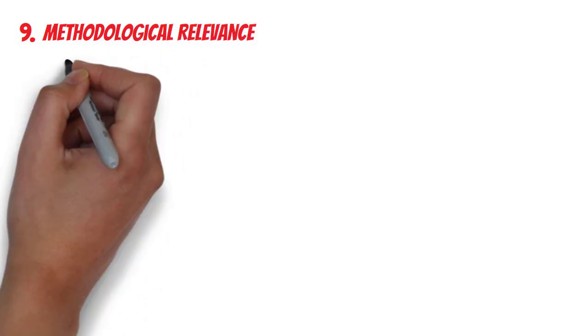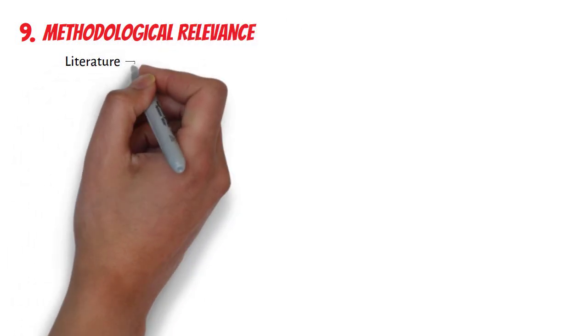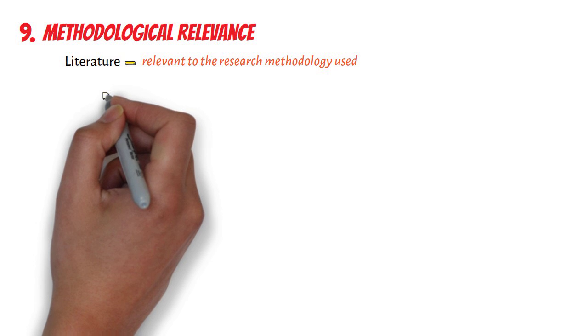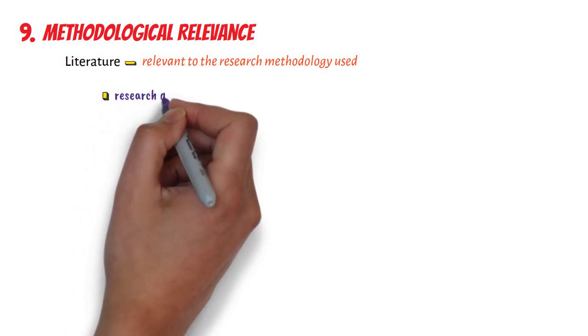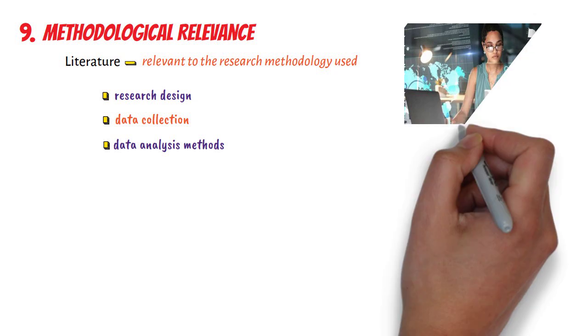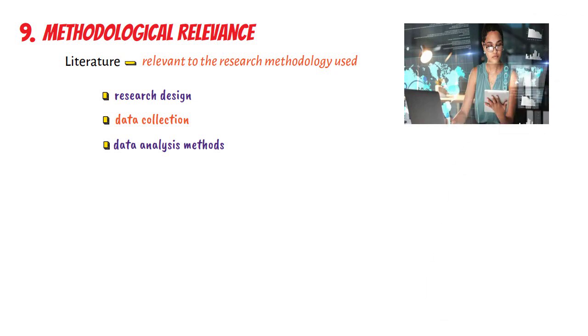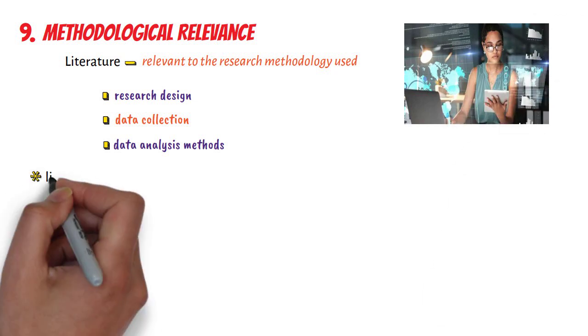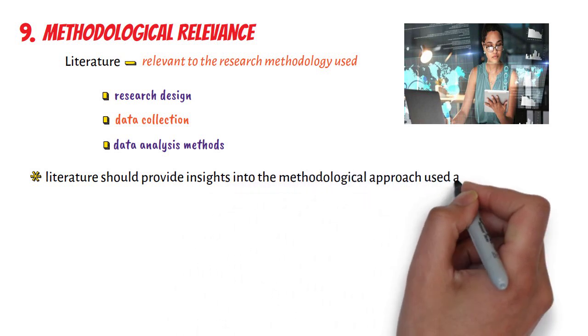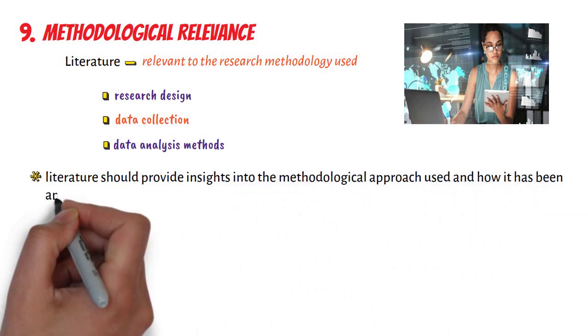Ninth, in terms of methodological relevance: literature should be relevant to the research methodology used. This includes the research design, data collection, and data analysis methods. The literature should provide insights into the methodological approach used and how it has been applied in similar studies.